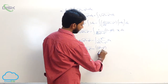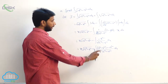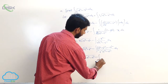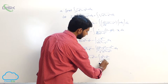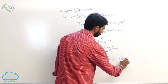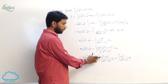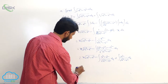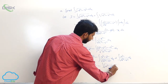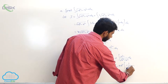Adding and separating a square in the numerator: x into root of a square minus x square minus integral of a square minus x square minus a square by root of a square minus x square dx. Separating the integration gives x into root of a square minus x square minus integral of root of a square minus x square dx plus a square into integral of 1 by root of a square minus x square dx.